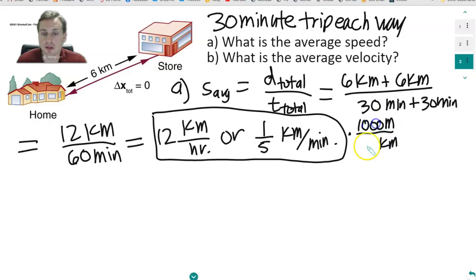And then minutes to seconds, 1 minute, 60 seconds. So we should multiply it by 1,000, and that gets 200 divided by 60. So it's 200 over 60, which is 20 over 6. So that's about 3.3 meters per second.